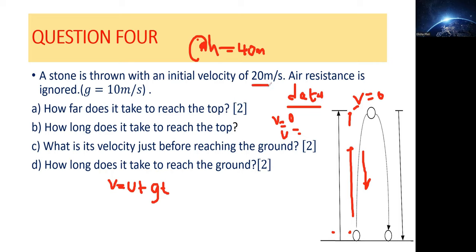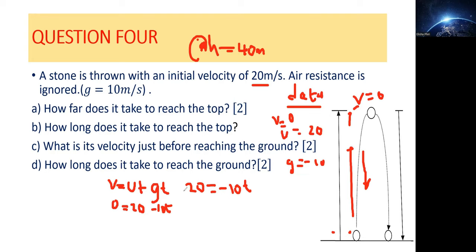Initial velocity is 20, as given. Since the particle is moving upwards against the pull of gravity, g equals negative 10. Plugging in: zero equals 20 plus negative 10 times t. Moving 20 to the other side gives negative 20 equals negative 10t. We divide both sides by negative 10 — negatives cancel — and we get t equals 2 seconds.